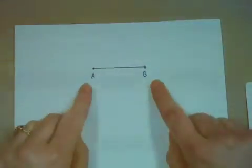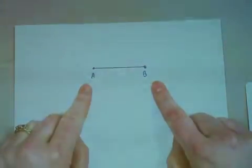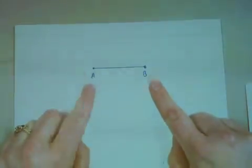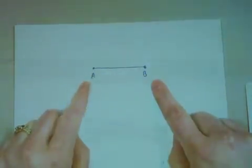Here you can see we have segment AB. I'd like to use my straight edge and compass to construct a square that has all sides that are of length AB.